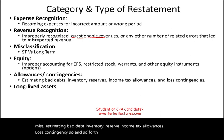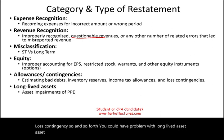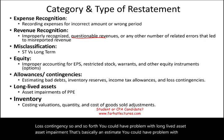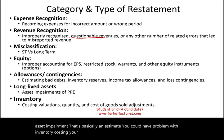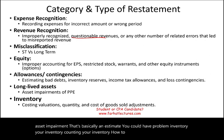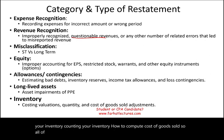You could also have problems with long-lived assets — such as asset impairment, which is essentially an estimate — or problems with inventory, including costing your inventory, counting your inventory, and how to compute cost of goods sold. All of these could be errors that will need restatement.